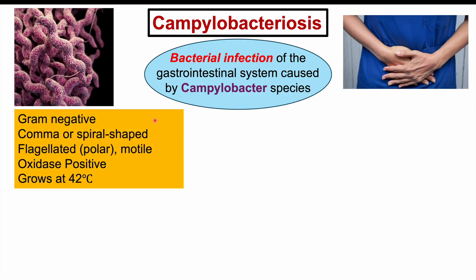Campylobacter is a particular bacterium. It's gram-negative, meaning that it stains pink when we do a gram stain on it. It is comma or spiral-shaped, or corkscrew-shaped. It is flagellated, so it's got a tail so it can move around — it's motile. It is oxidase positive and it grows at 42 degrees Celsius. A way to remember this is that Campylobacter likes a hot campfire — 42 degrees Celsius.